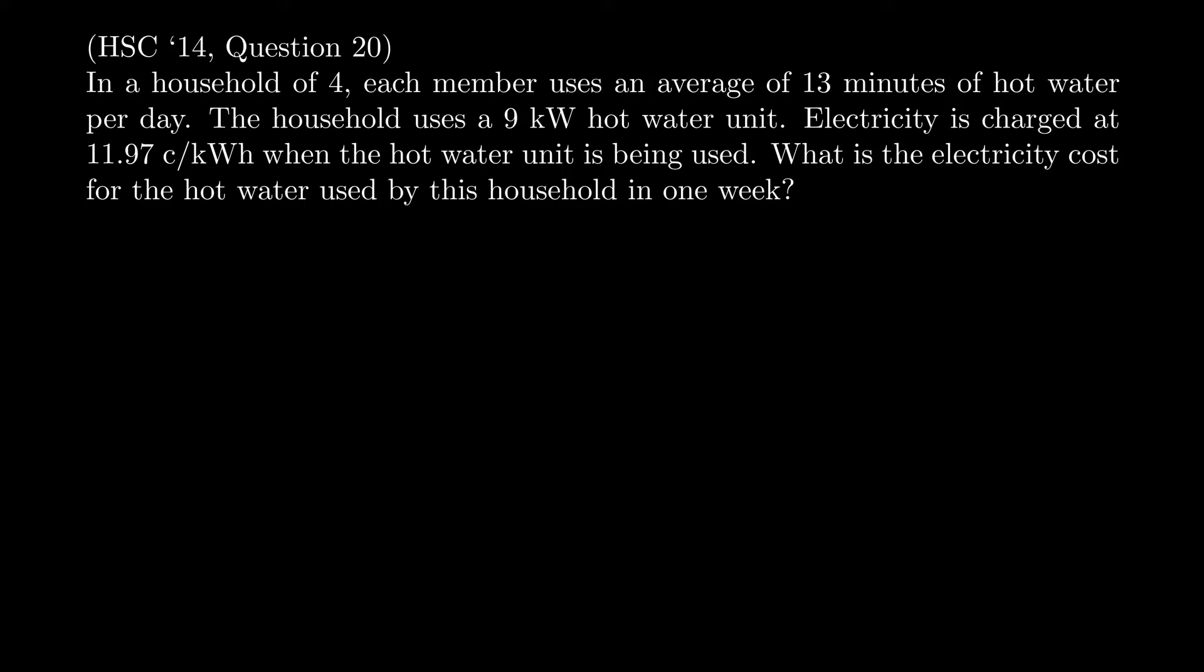The first thing to notice is that time is being measured in minutes—see there's 13 minutes there—but in these calculations we want to measure time in hours. So a minute is 1/60th of an hour, so we really have 13 over 60 hours. That's how you want to think about the time it's being used for: it's 13 out of 60 hours. The power rating is 9 kilowatts.